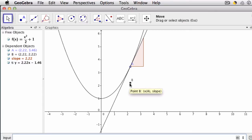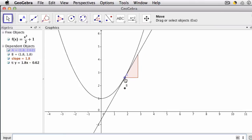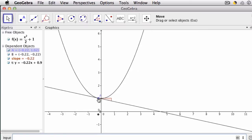So notice B is sitting down here. Why? Well, because the x value of B matches A, but the y value is going to match the slope of our function at A. As I move this along, you can see that the height of B is changing. And students might wonder why this is happening, and GeoGebra allows them to explore that.